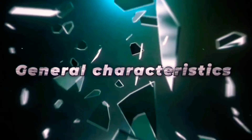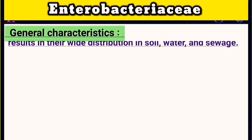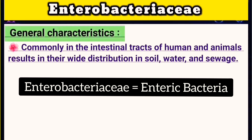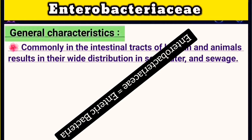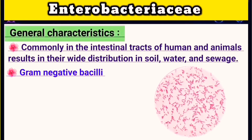Enterobacteriaceae species all share some general characteristics. They inhabit the intestinal tract as normal flora but may also be pathogenic in both humans and animals. This preference for the intestinal tract is what gave the family its name, derived from words meaning enteric bacteria. Another characteristic is that they are all gram-negative bacilli, which appear as pale red rods after gram staining.